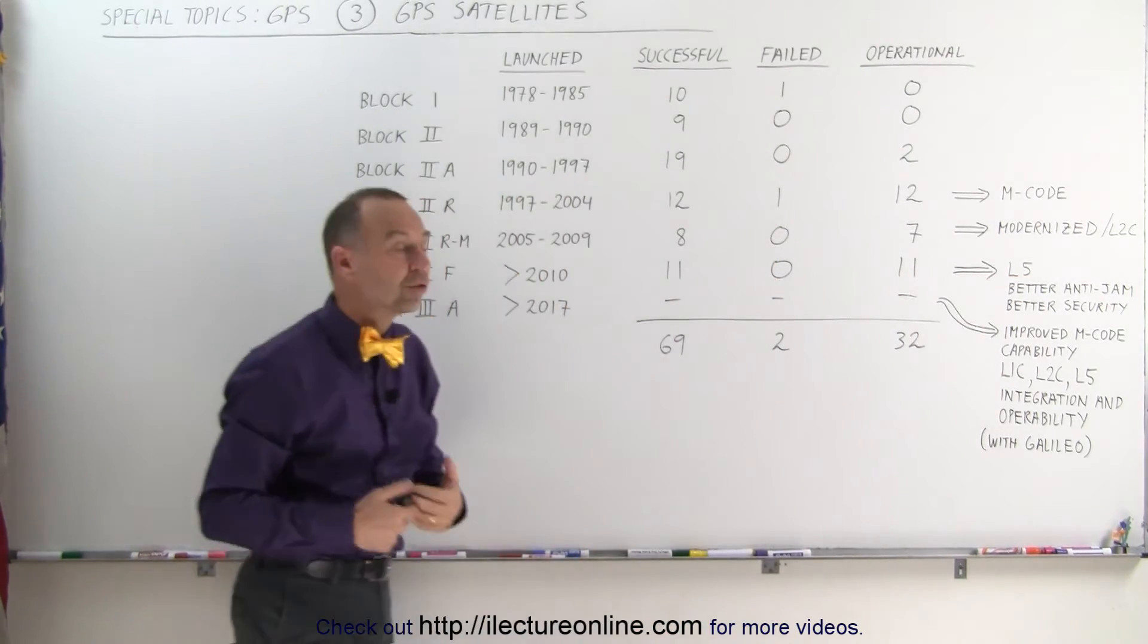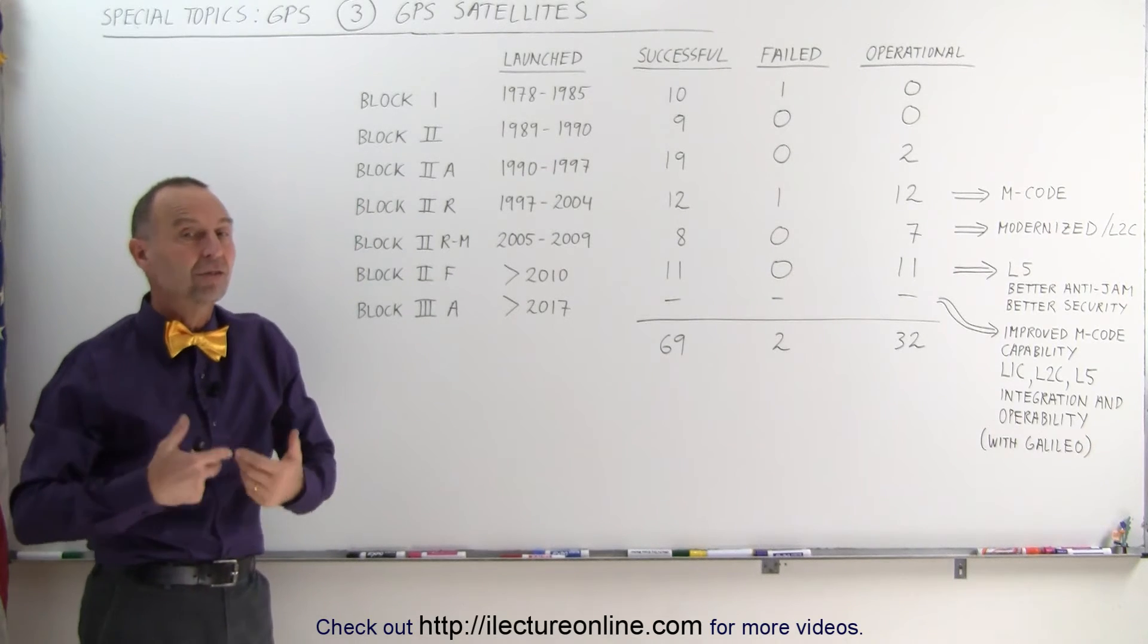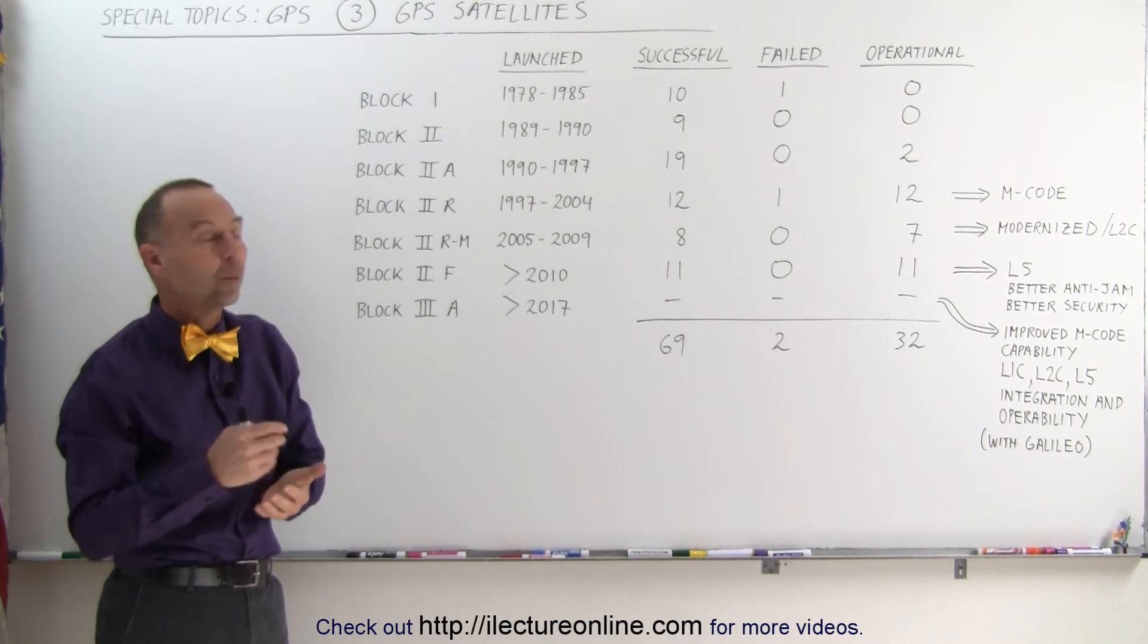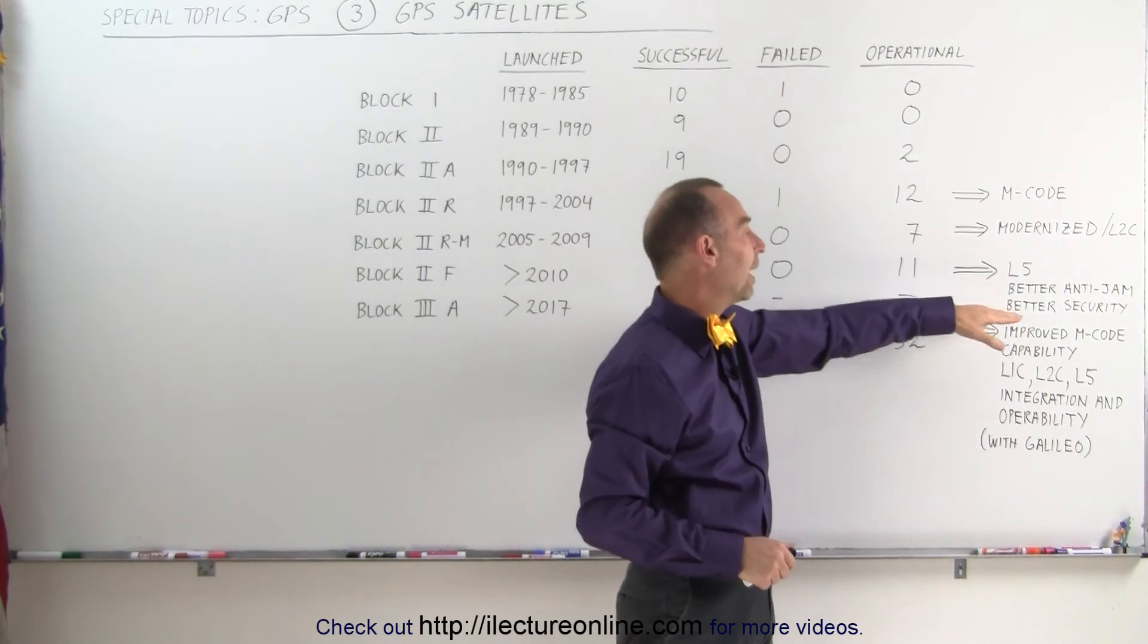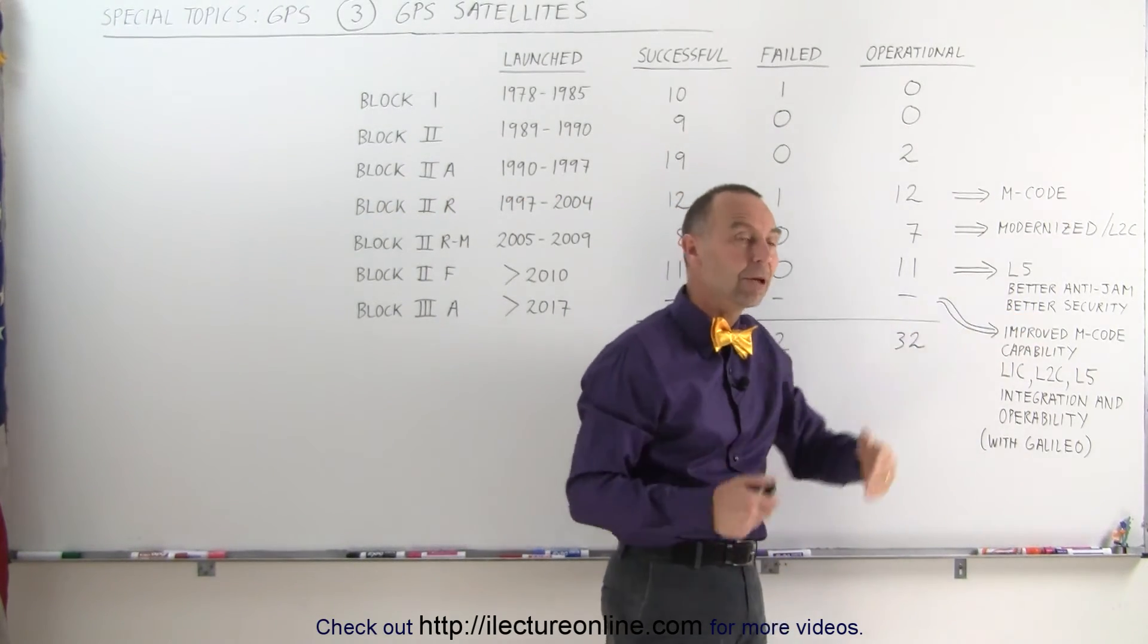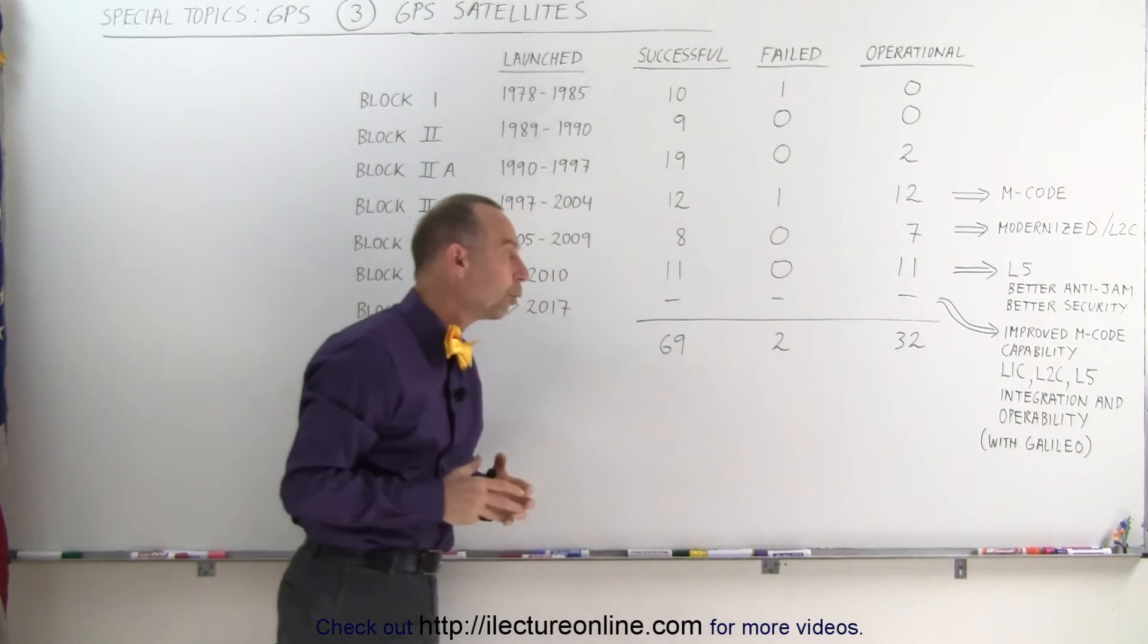Those satellites introduced the L5 channel. The L5 channel is for civilian use to give them better civilian capability that they did not have in the L1 and L2 channels. Also introduced were better anti-jam and better security measures capable on those satellites to make them more robust.